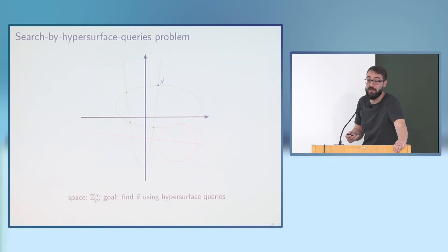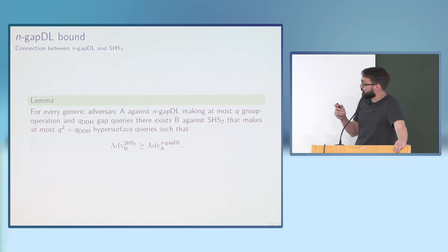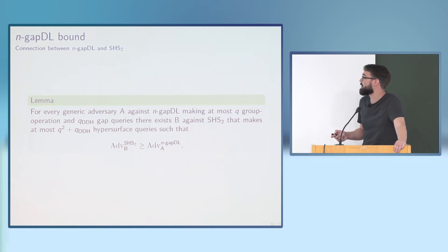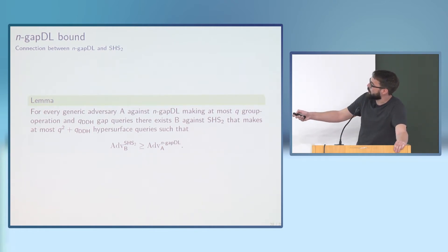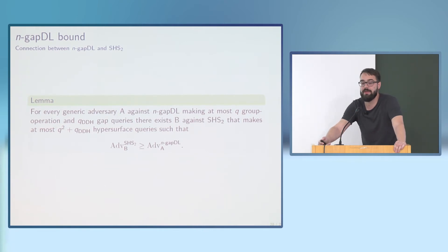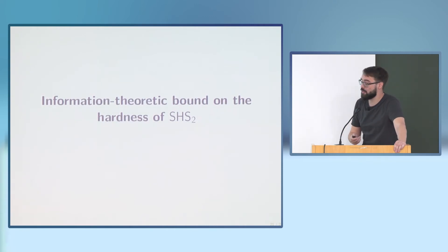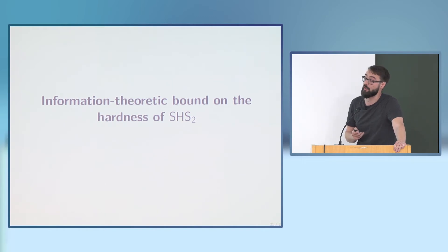From every adversary against the generic group multi-instance gap d-log problem, we can build an adversary against this search by hypersurface problem with the same advantage, with a quadratic blowup in the number of queries. This blowup stems from simulating the group operation oracle, which must check against all already-defined labels. This allows us to focus on the geometric search problem and find an information-theoretic lower bound.